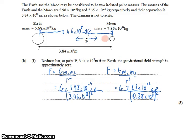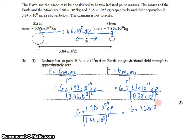therefore G times 5.98 times 10 to the 24 times p all over 3.46 times 10 to the 8th squared equals G times 7.35 times 10 to the 22 times p over 0.38 times 10 to the 8th.